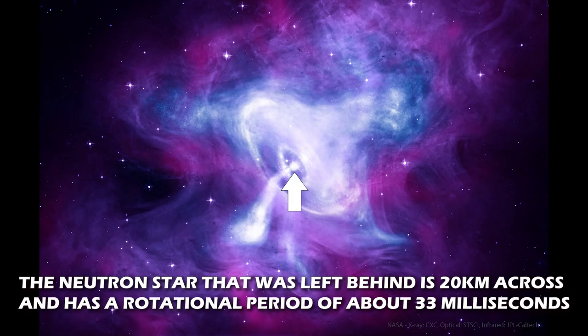The neutron star that was left behind is about 20 kilometers across and has a rotational period of about 33 milliseconds. That is, it completes one rotation every 33 milliseconds.